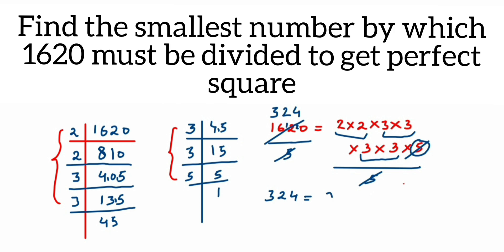This is equal to 2×2, then 3×3, and then 3×3. If you observe, we got exact pairs of factors. This means 324 is a perfect square.